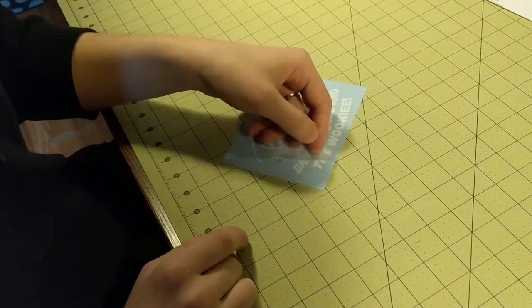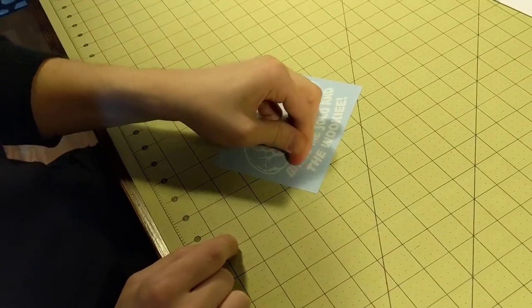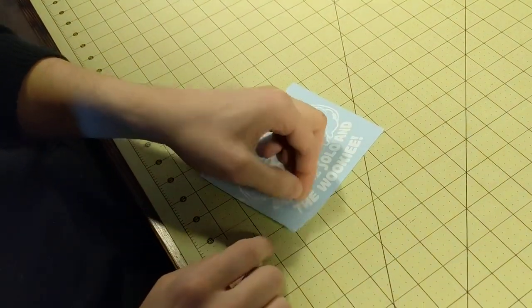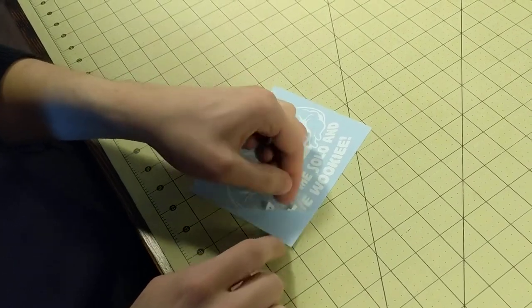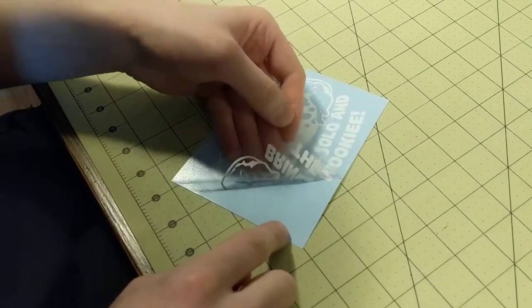All you need to do is just push the transfer tape back down, rub it over a little bit with a fingernail, and then if you're having trouble like this just kind of push your nail over it as you're peeling it up and it'll pick the vinyl right up.